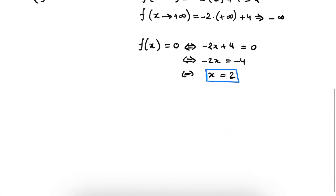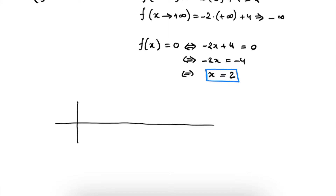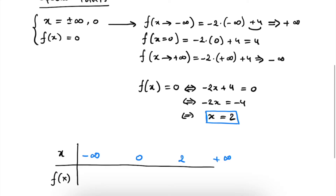At this point, the heavy lifting is already done, because now we simply translate the results that we got into a diagram or a table. This table will help us to identify where our function will be positive and where it will be negative. On the first row, the x row, we fill in all of these special points for x: minus infinity, 0, 2, and plus infinity. We also found that for x is equal to 2, our function will be 0. So these are the four values of x for which we know what our function value is.